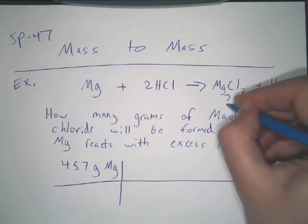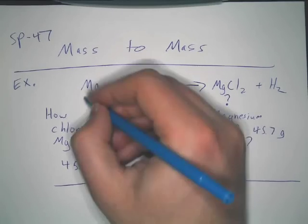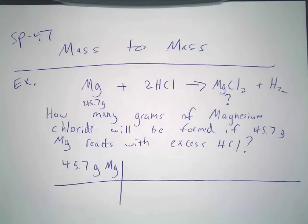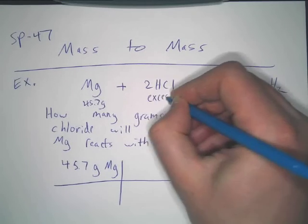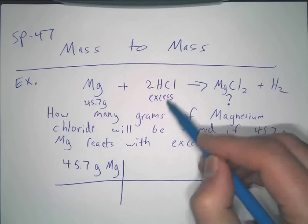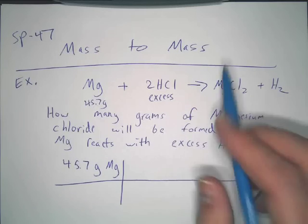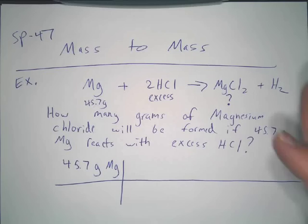So, which of these four compounds is magnesium chloride? MgCl2. So, it's asking for this. It's giving us 45.7 grams of this. And it's telling us we have excess this. So, do we care about HCl at all? No, we don't. Excess means you ignore it. That's good that you are good with that.